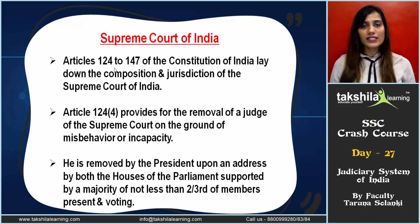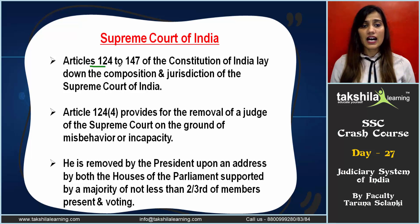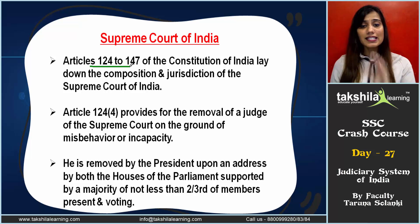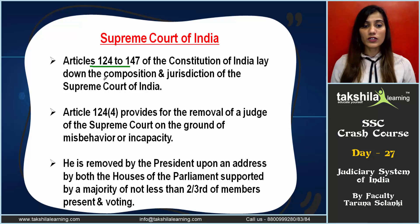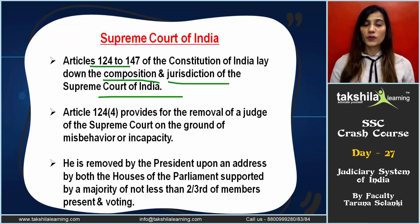Articles 124 to 147 of our Constitution deal with the jurisdiction of the Supreme Court of India. The Supreme Court should have 34 judges including the CJI. These articles cover how judges are appointed, how they administer, and how they carry out their work. There are some specific jurisdictions — original jurisdiction, appellate jurisdiction — all covered under these articles.